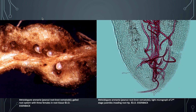Here are images showing peanut root-knot nematode, Meloidogyne arenaria, and three females of this species in a sectioned galled root system. On the right we have the same species but of the second stage juveniles, which is the infective stage of the nematode invading a root tip.